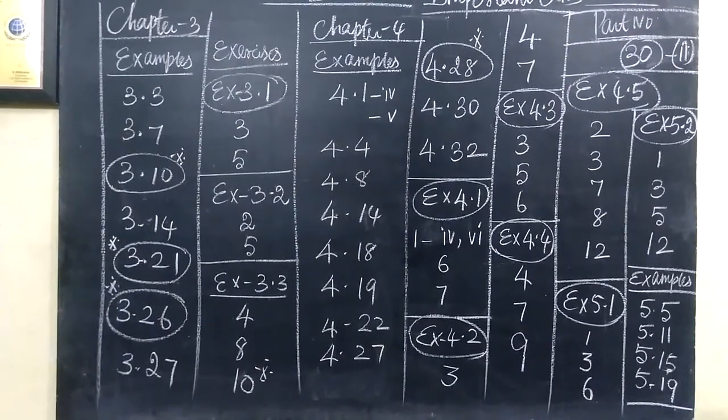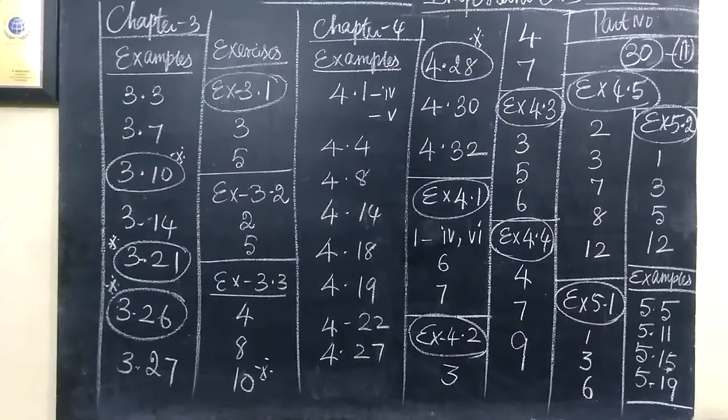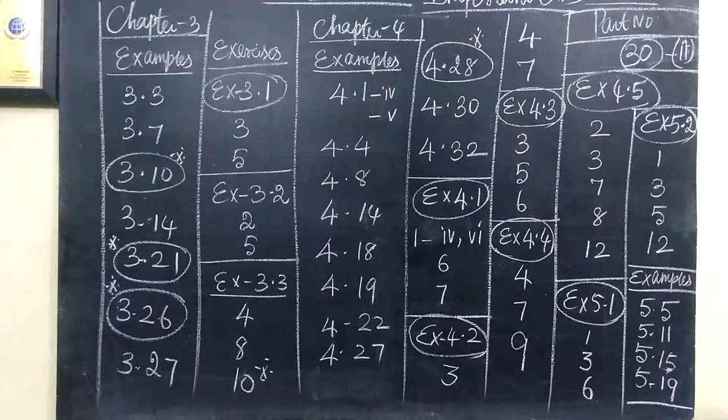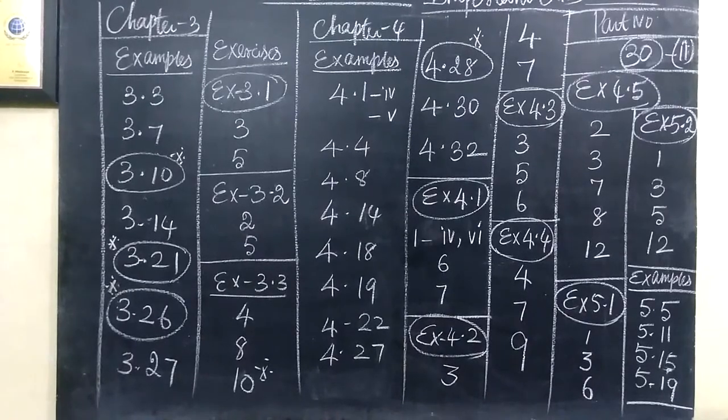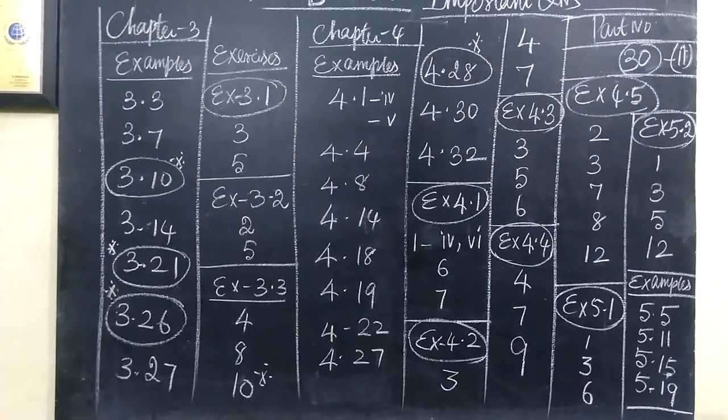Exercise 3.1, 3.5 and 3.2, 2.5, 3.3, 4, 8, 10 is more important. Then chapter 4 is examples 4.1.